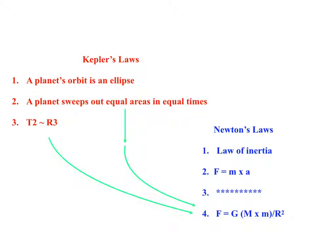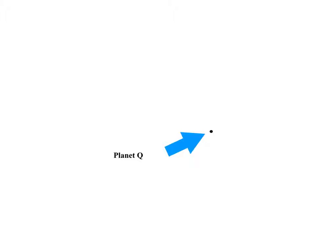Let's develop a very simple model of planetary motion. Here again is planet Q, and here is the Sun. We are going to imagine a very simple orbit, a circle. A circle, after all, is a very special type of ellipse, a completely symmetric ellipse.